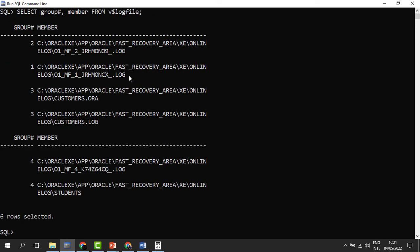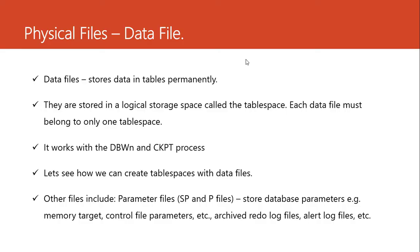When we run the command, the database confirms the change. Checking the group number and members again, we can see group four has been created and it has a file called 'student'. Apart from the redo log file, we also have the data file, which stores data permanently. Each data file must belong to only one tablespace. The data file works with the database writer and the checkpoint process. We'll see how to create the tablespace and data file later.